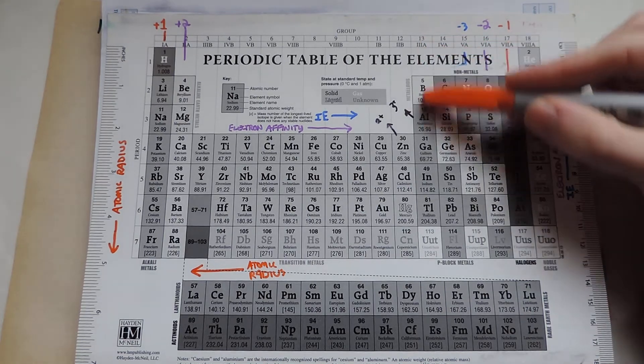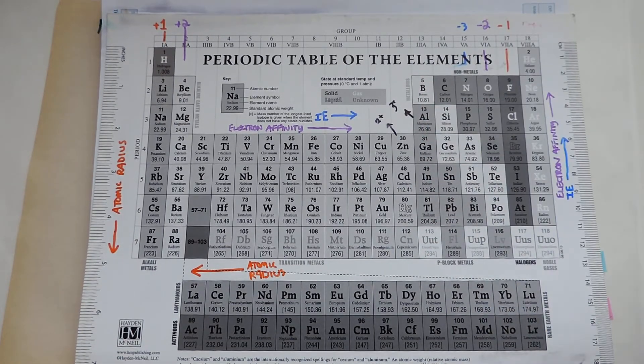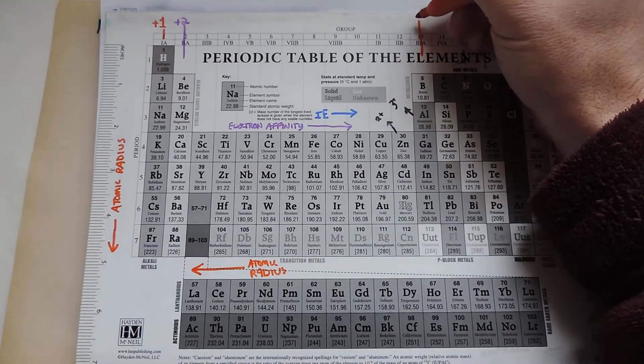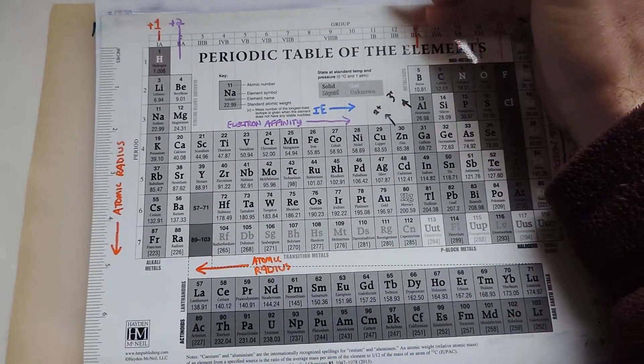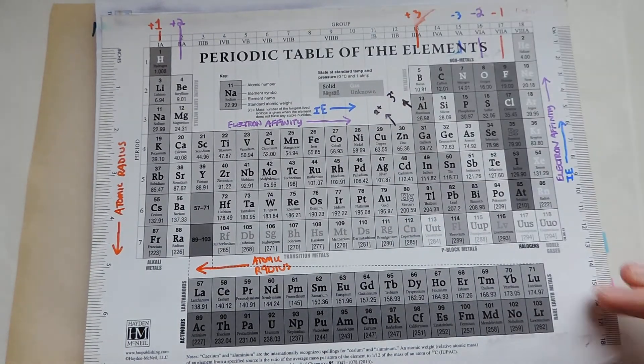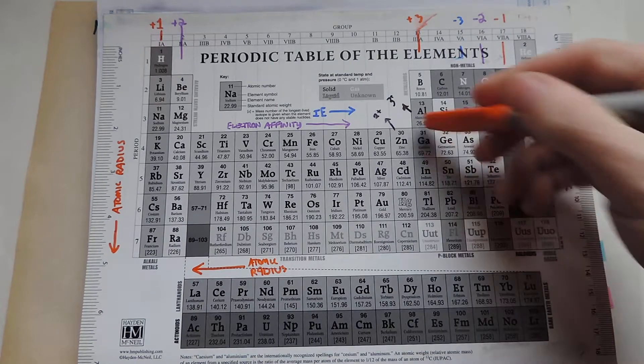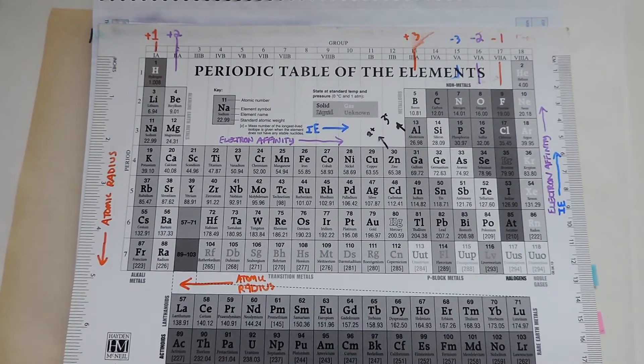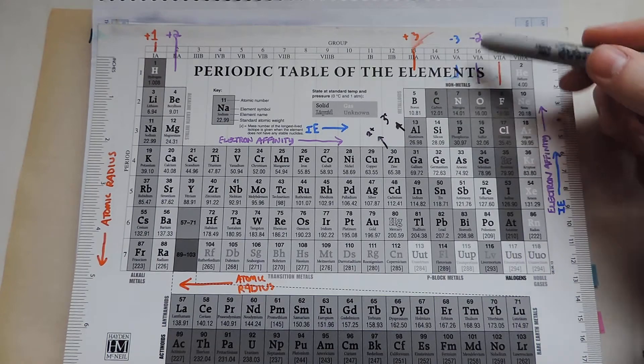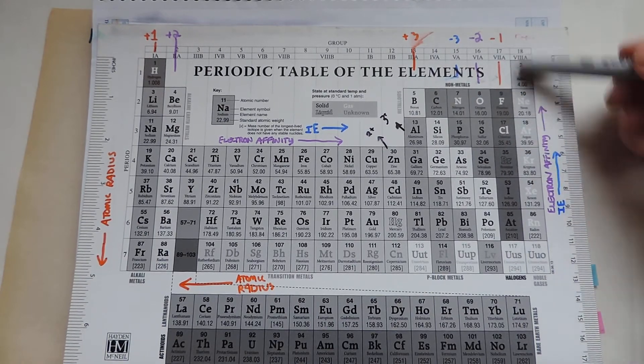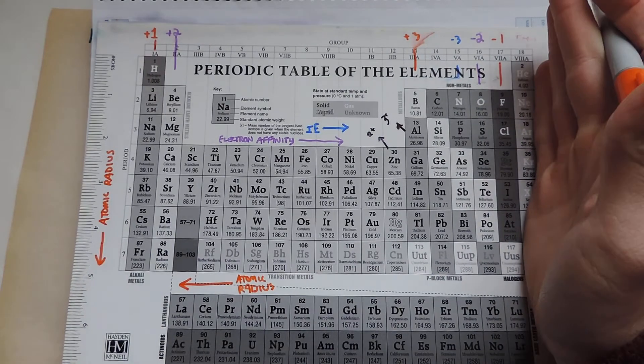And actually with this row as well, we're going to have a plus three. Let me put a plus three here, although they kind of get a little hairy. And then generally we're going to have a minus three, minus two, minus one here. Noble gas is where it ends at.